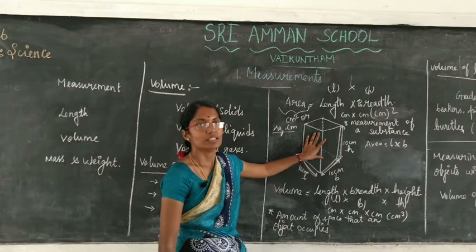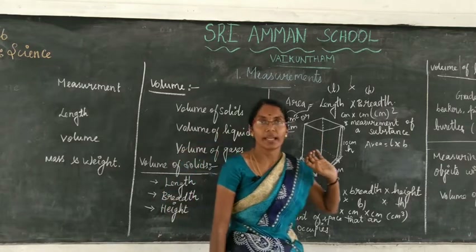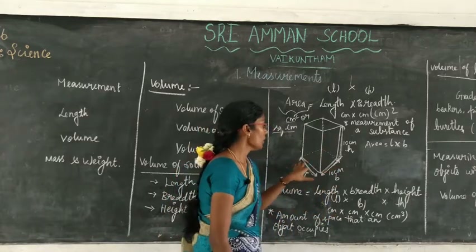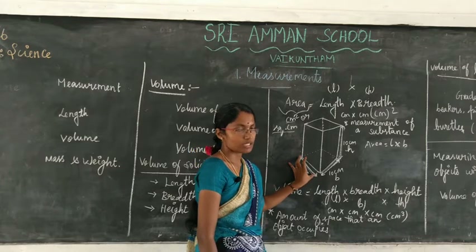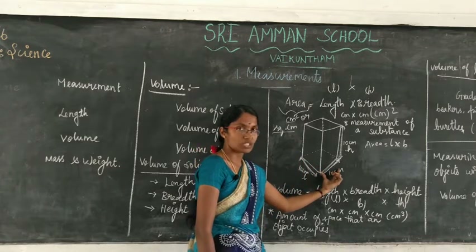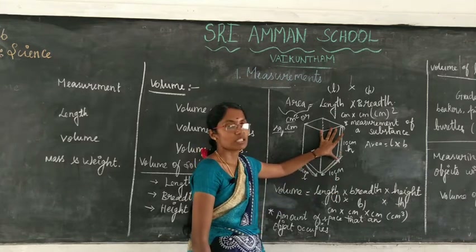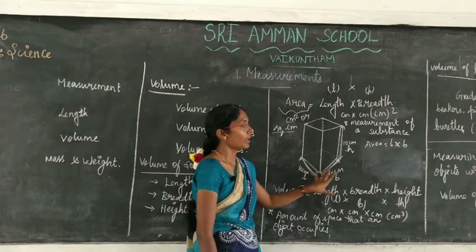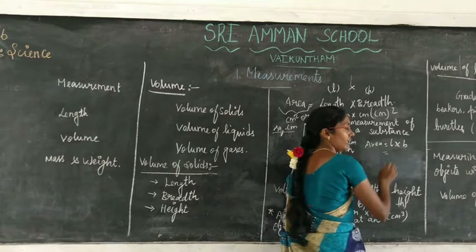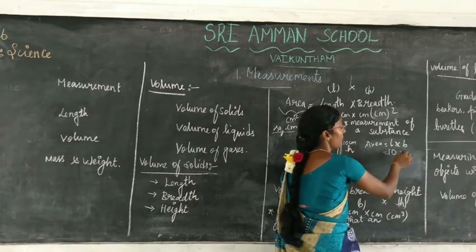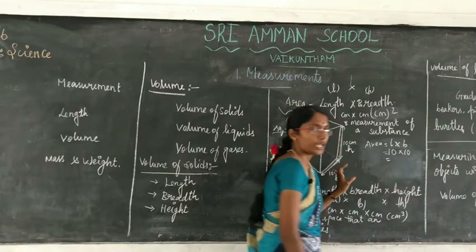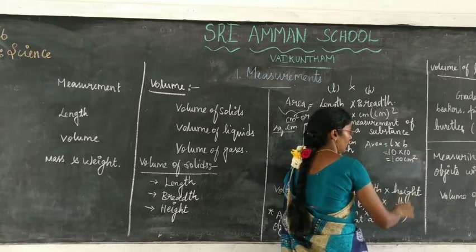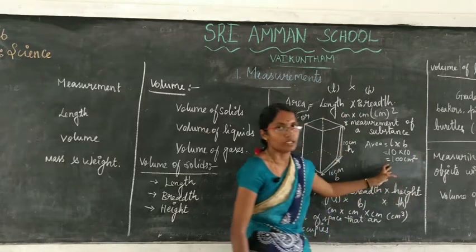Consider a square box where all sides are equal. The length, breadth, and height of this box are each 10 centimeters. To find the area, we need length and breadth only. Multiplying 10 by 10 gives us 100 centimeter square. Centimeter square is the unit of area.